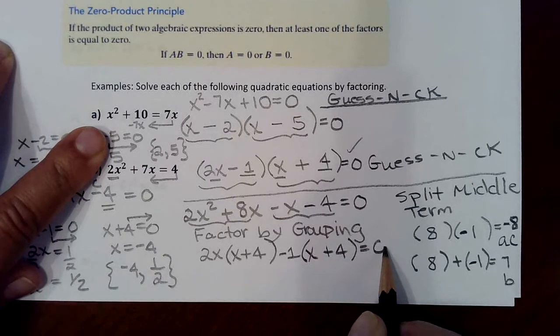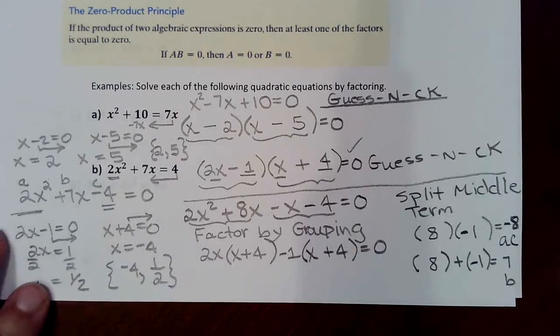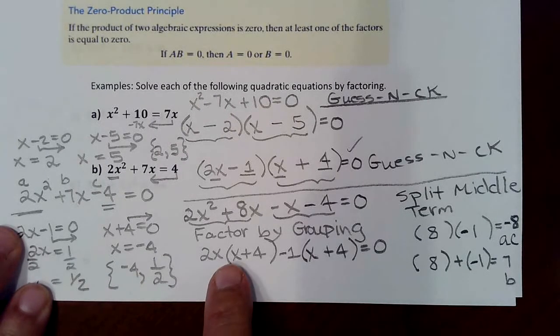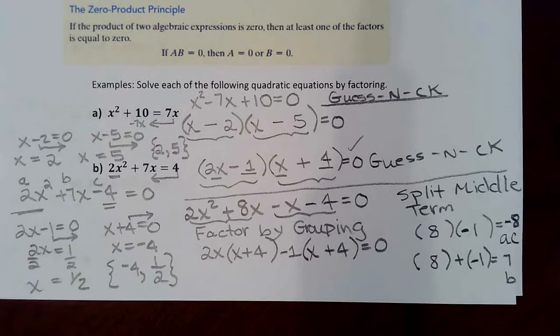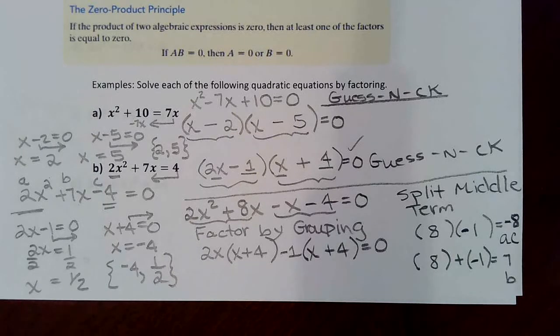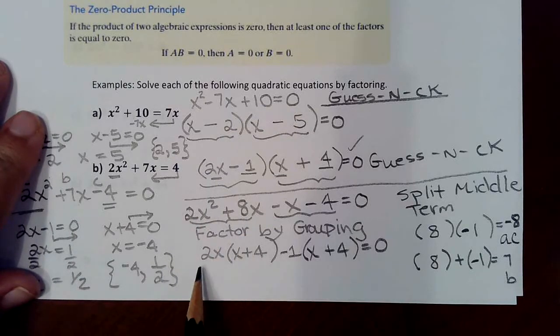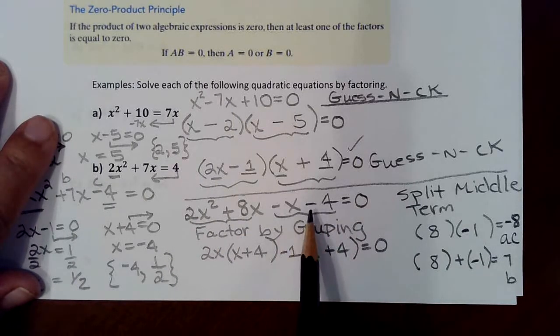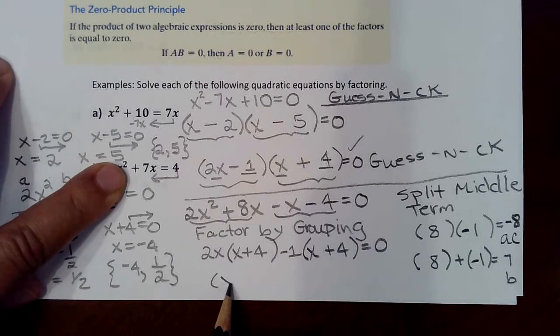And if you do remember the method of factor by grouping, it then goes on to where you're looking at this as a first term and a second term. You're looking at this as two terms and asking yourself, once again, what do they have in common? So it's like you're pulling out a GCF three times. You're pulling one out for the first two terms, which was 2x. You're pulling out another GCF for the back two terms, which was negative 1. And now you're looking at this as two terms. What do they have in common? The x plus 4.